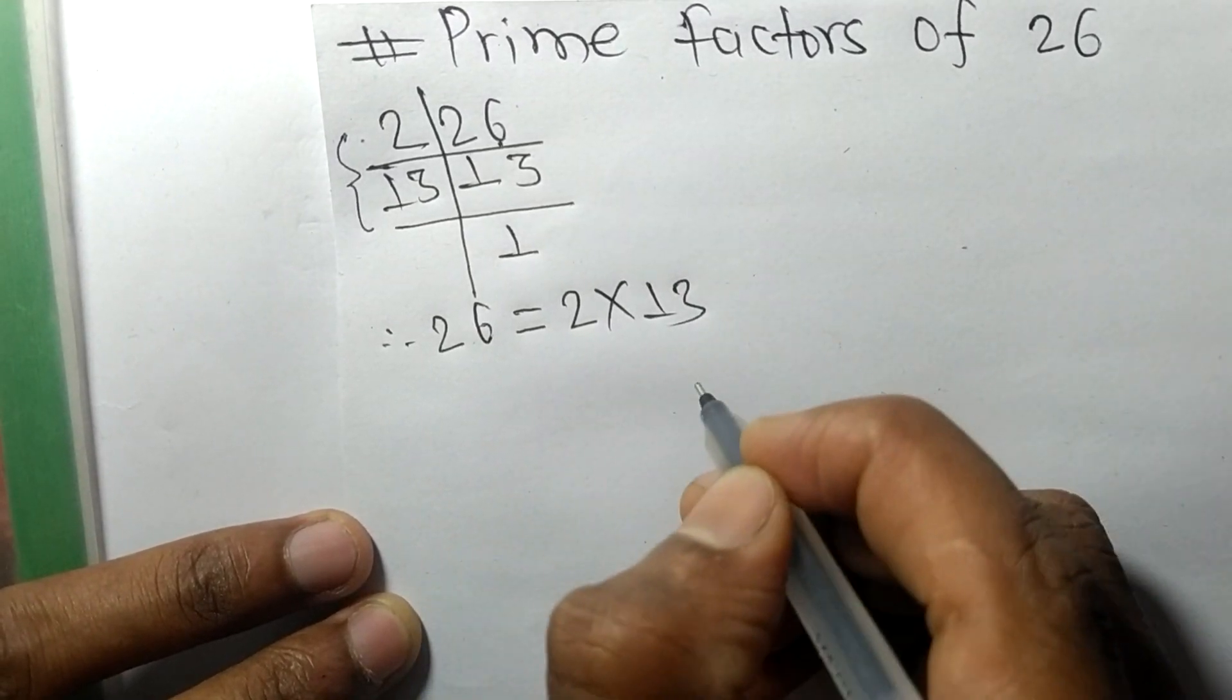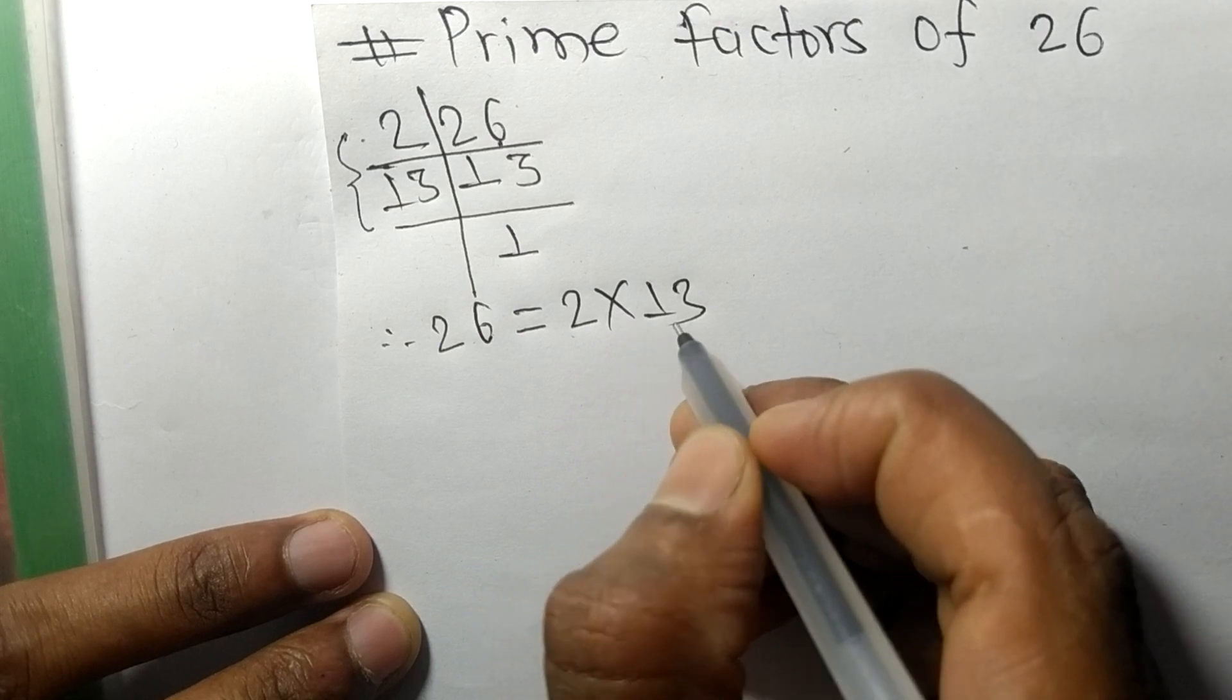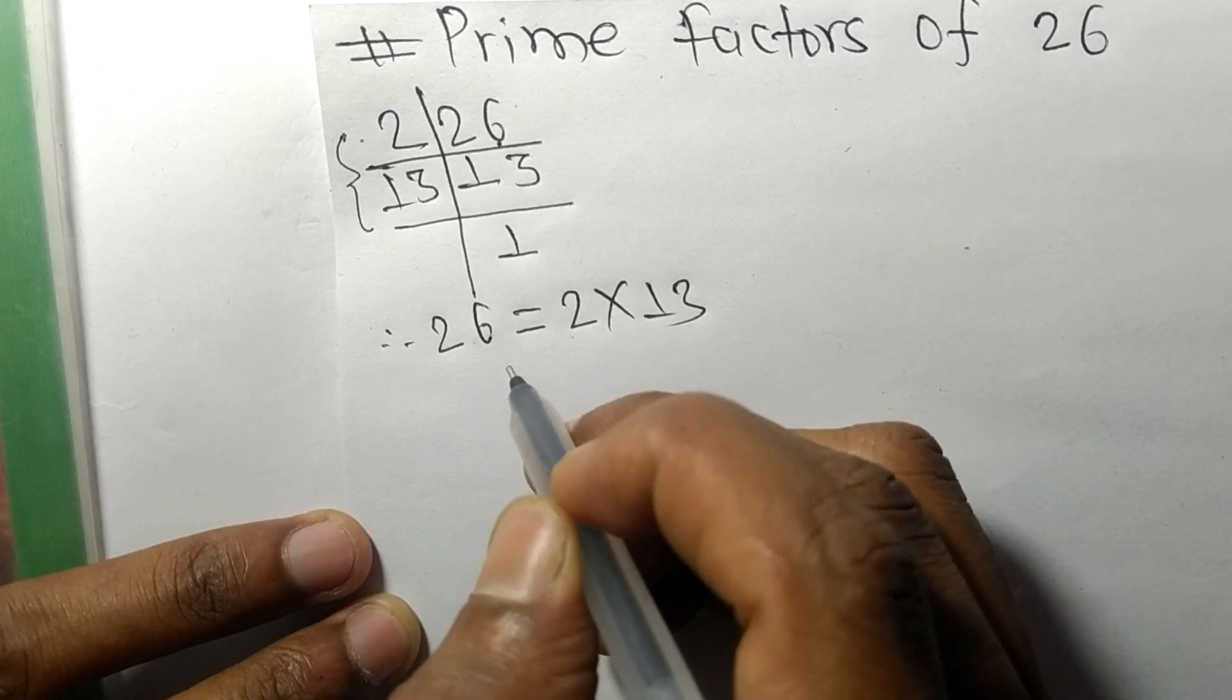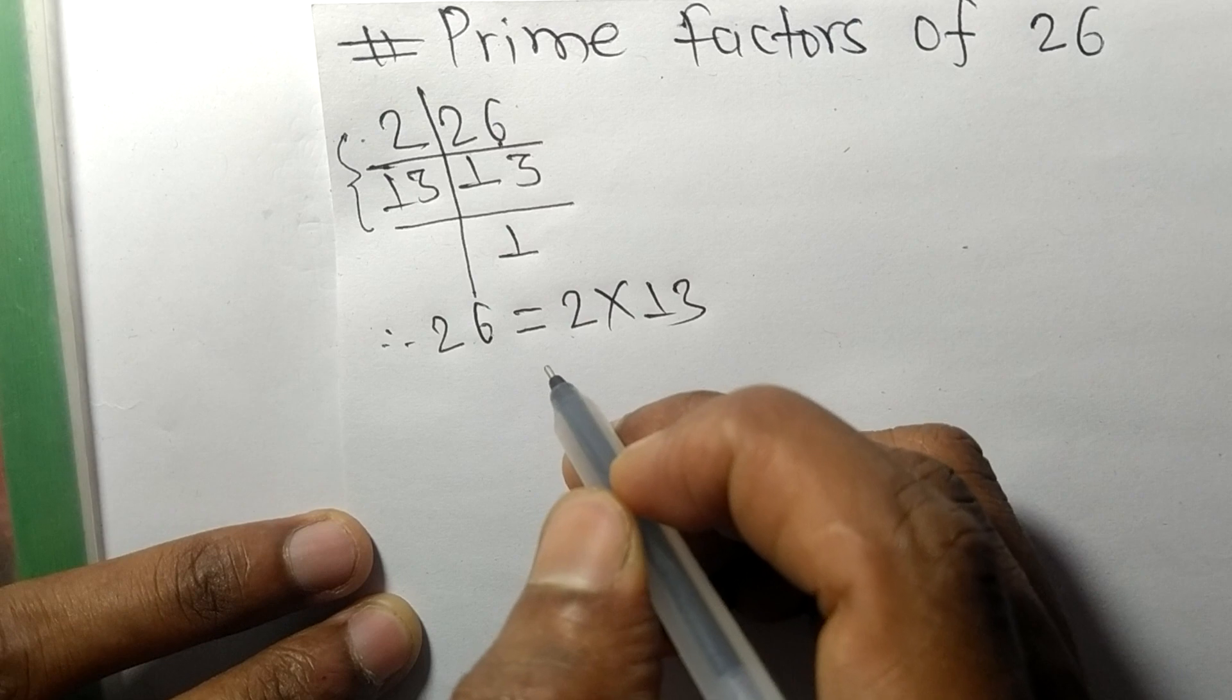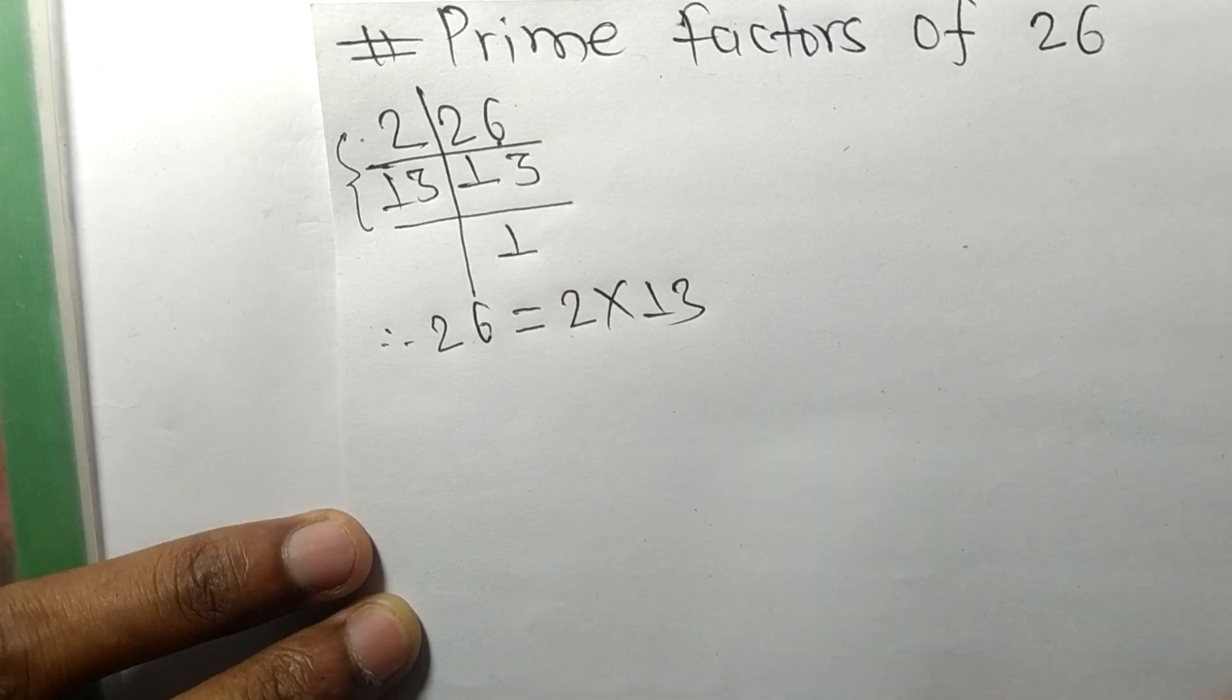So 2 and 13 are the prime factors of 26. That's all for today, thanks for watching.